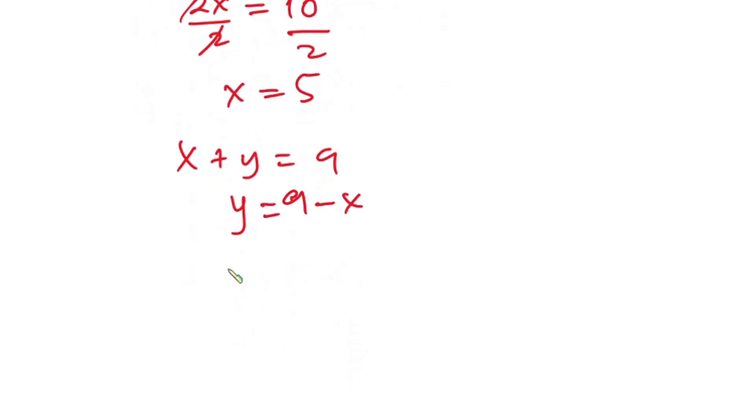So we have y is equal to 9 minus x is 5 over here. So we have y is equal to 9 minus 5 is nothing but 4. Okay, so now we know that x is 5 and then y is 4.